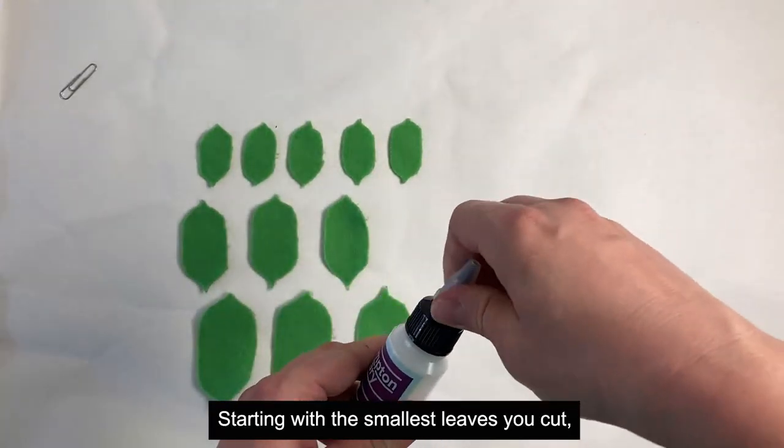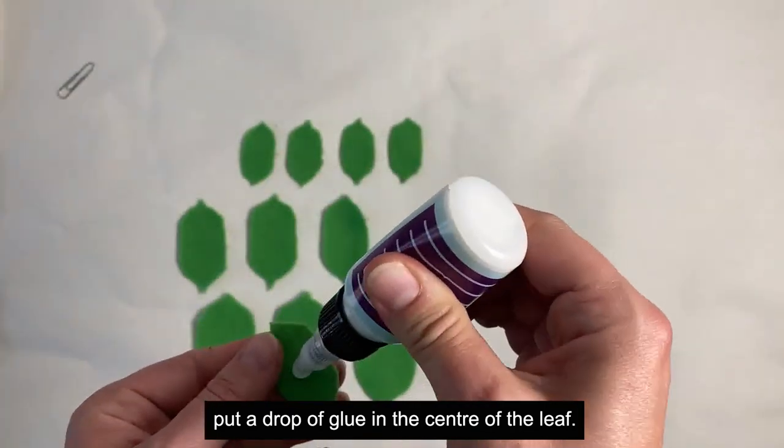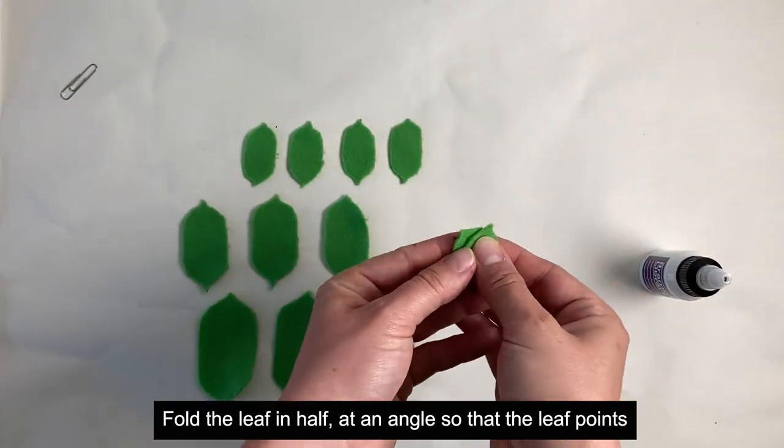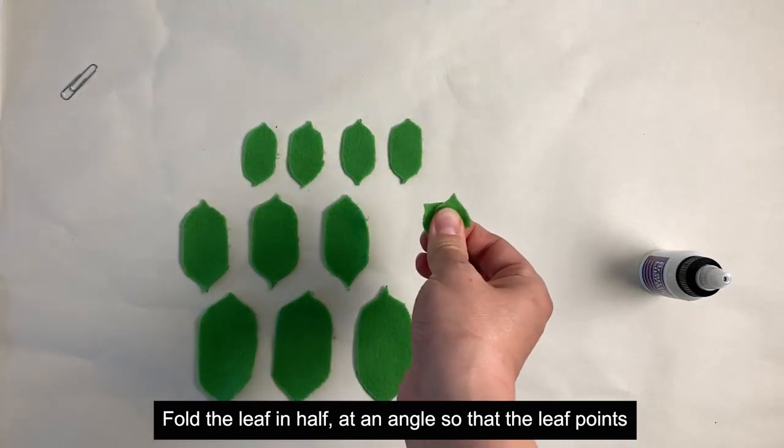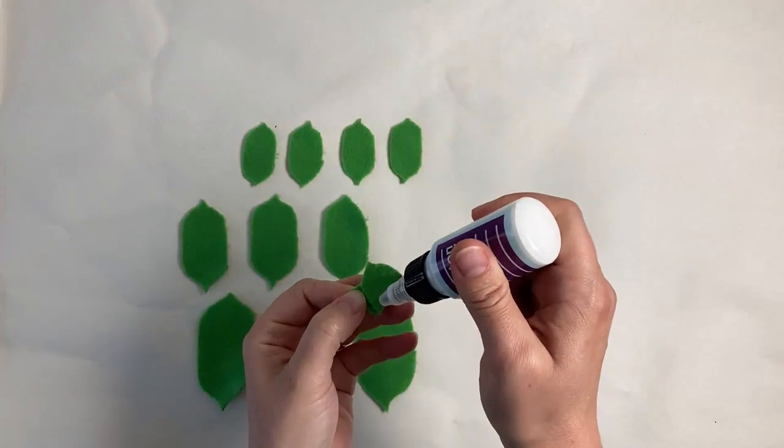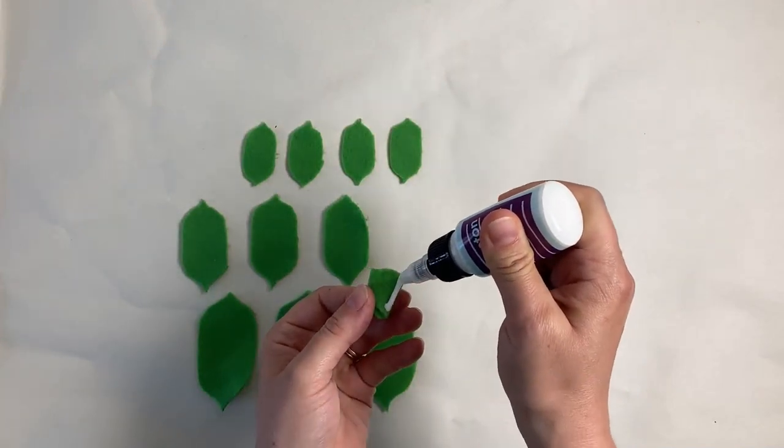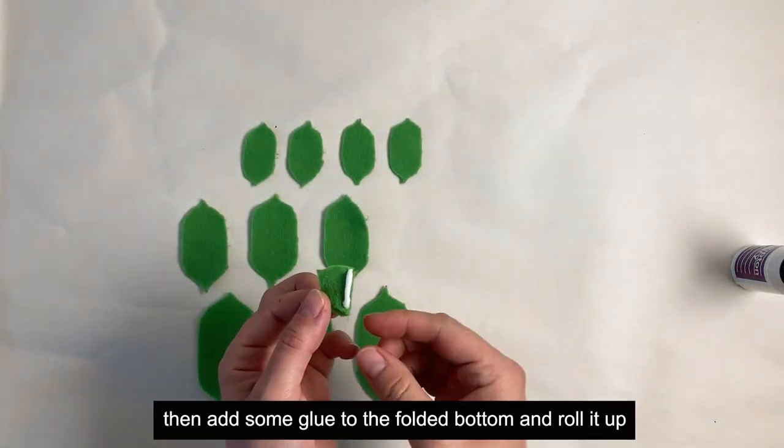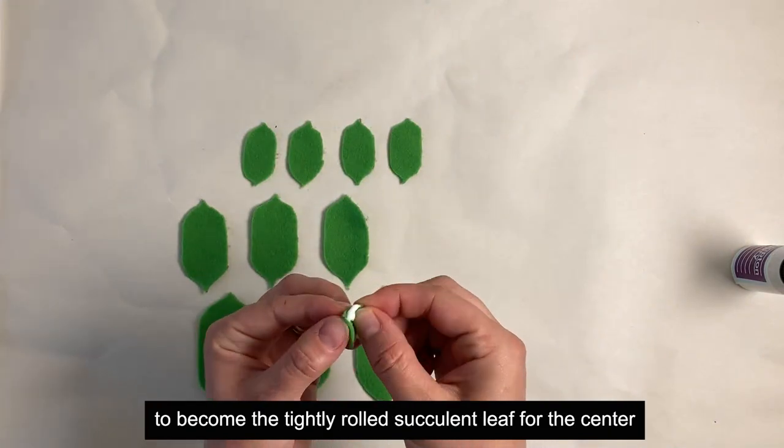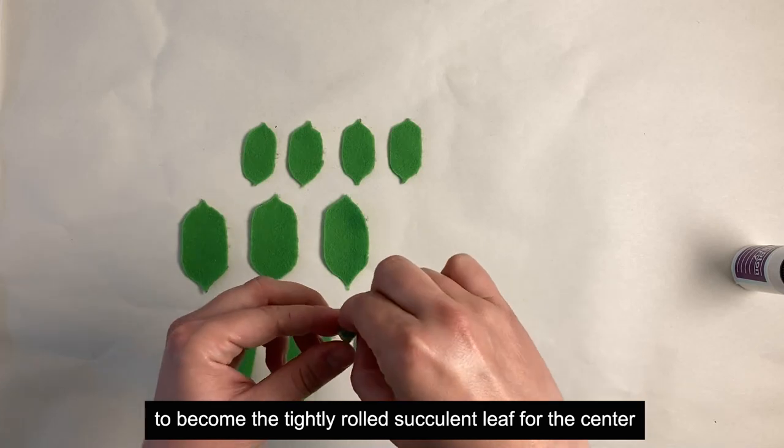Starting with the smallest leaves you cut, put a drop of glue in the center of the leaf. Fold the leaf in half at an angle so the leaf points are pointing in different directions. Hold it together tightly until the glue dries. Then add some glue to the folded bottom and roll it up to become the tightly rolled succulent leaf for the center of your plant.